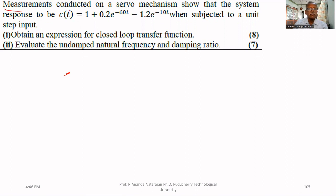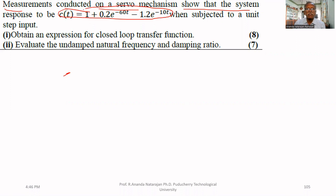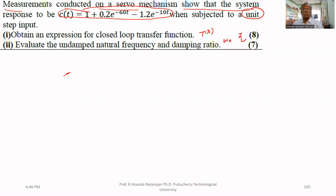Measurements conducted on a servomechanism show that the system responds as c(t) = 1 + 0.2e^(−60t) − 1.2e^(−10t) when subjected to a unit step input. We need to obtain the expression for the closed-loop transfer function T(s), evaluate the undamped natural frequency ωn, and find the damping ratio ζ.